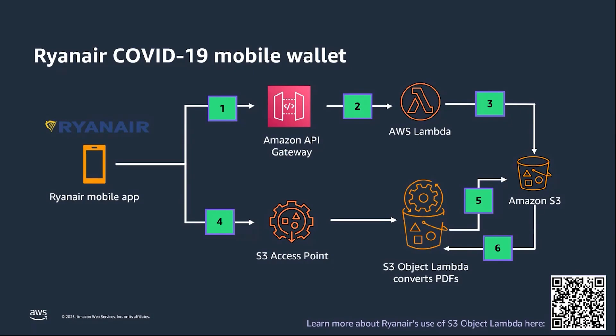If the PDFs have already been converted, S3 Object Lambda responds to the client. If the PDF was not already converted to an image, Lambda does the conversion and responds with the image. By shifting this logic to AWS and using S3 Object Lambda, Ryanair was able to include PDF files without any app changes in under three days, allowing their customers to move through the booking process much faster.